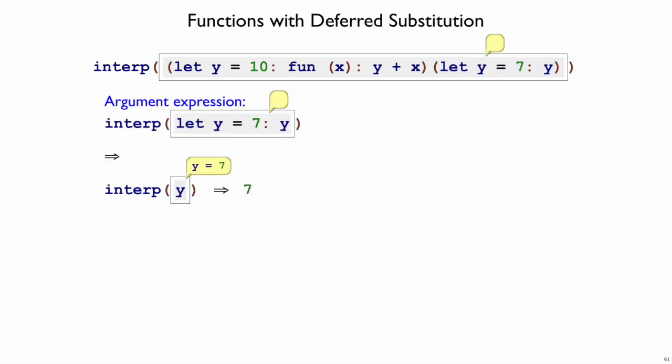When we have let y equal 7, we know how that works with environments, because we still have the empty environment here so far. Then we get a 7 that we bind to y, and then we interpret y with that environment, we get a 7 out.